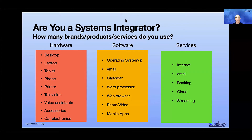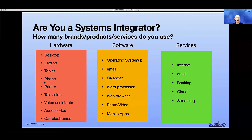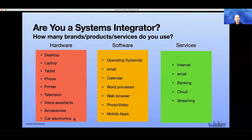Your phone is now a smartphone, your printer, your television is now a smart television. You might have a voice assistant like Google Home or Amazon Alexa. You might have accessories that you plug into your computer, car electronics, and so there's just a lot of hardware — and that's just the hardware.